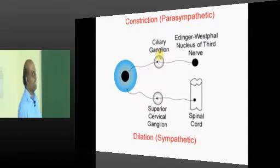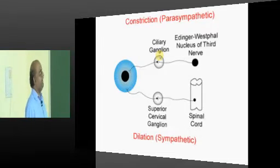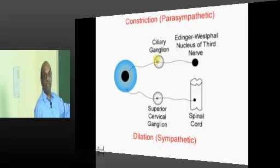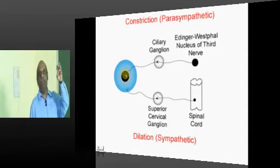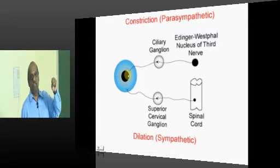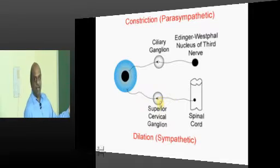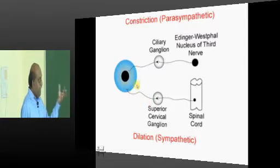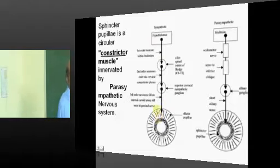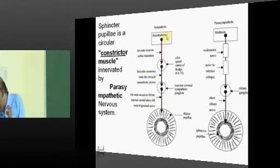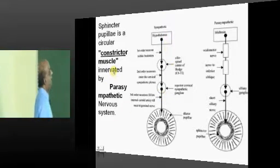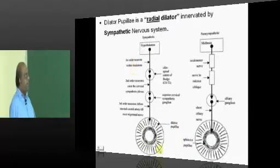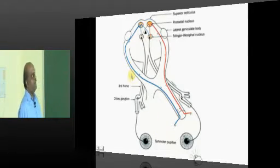How is constriction of the pupil mediated? The Edinger-Westphal nucleus of the third cranial nerve sends parasympathetic fibers to the ciliary ganglia, which in turn lead to sphincter pupillae contraction leading to miosis. The superior cervical ganglia throw postganglionic sympathetic fibers which lead to pupillary dilation. Sphincter pupillae are circular and innervated by the parasympathetic nervous system, while dilator pupillae are innervated by the sympathetic nervous system.